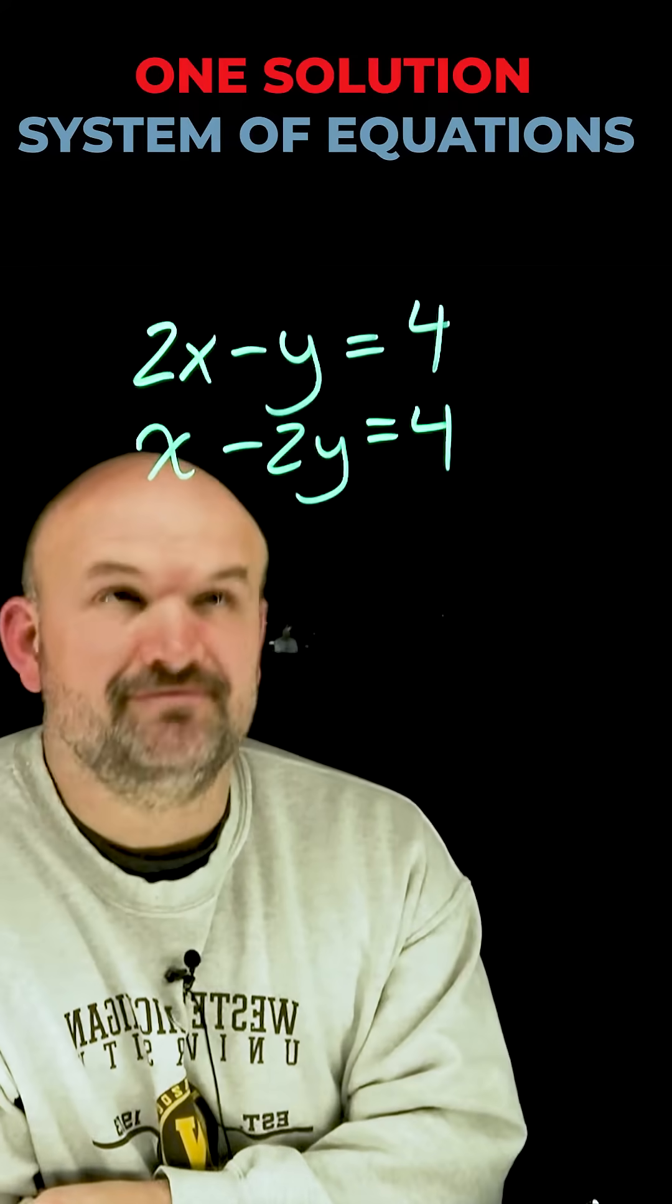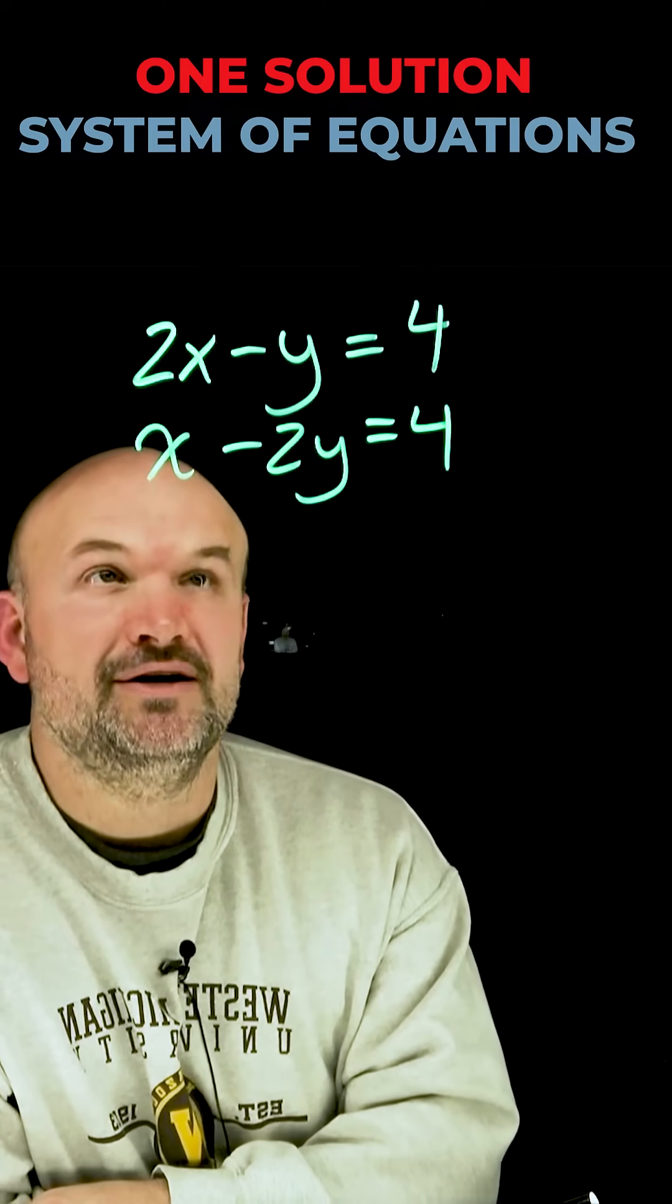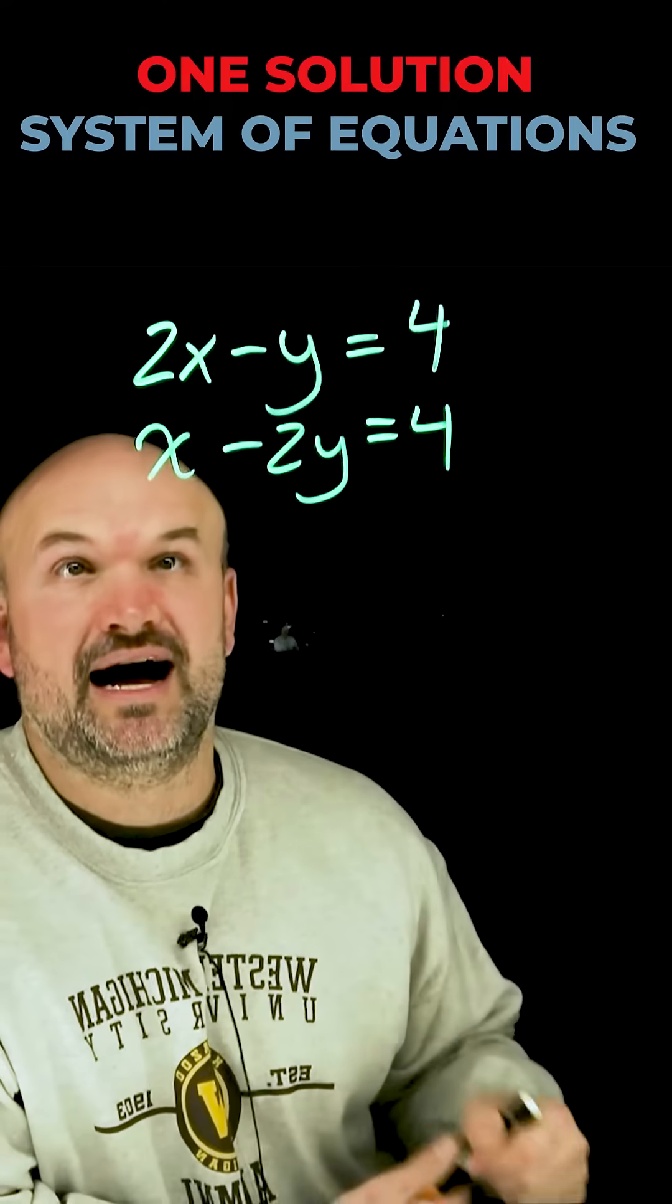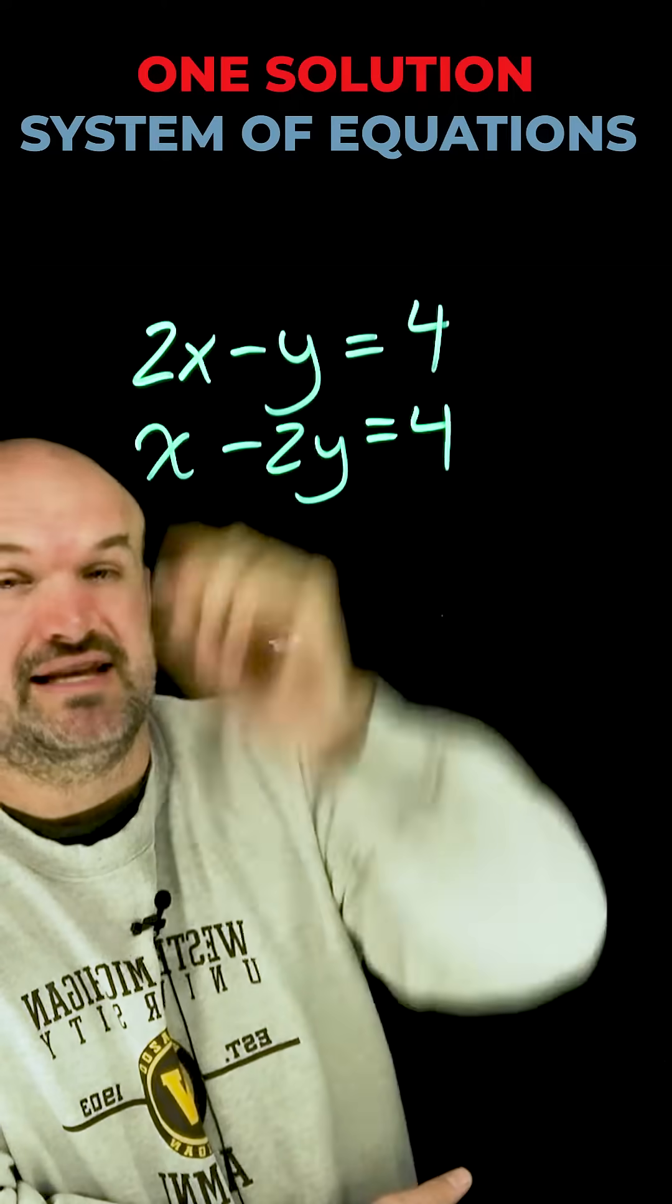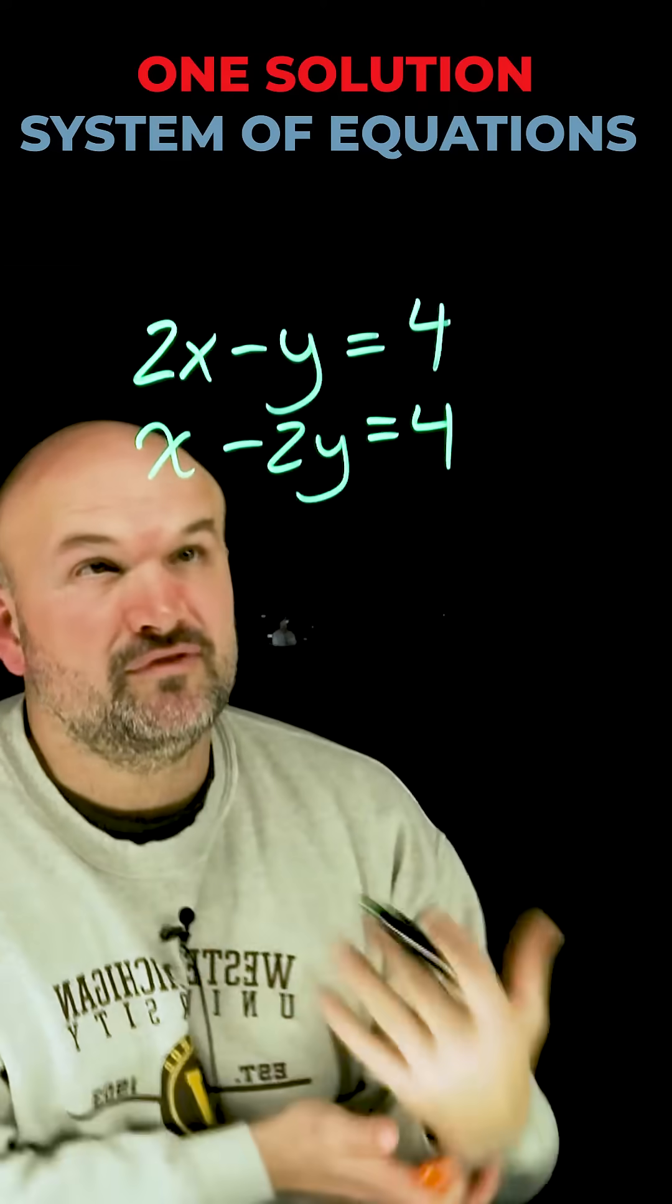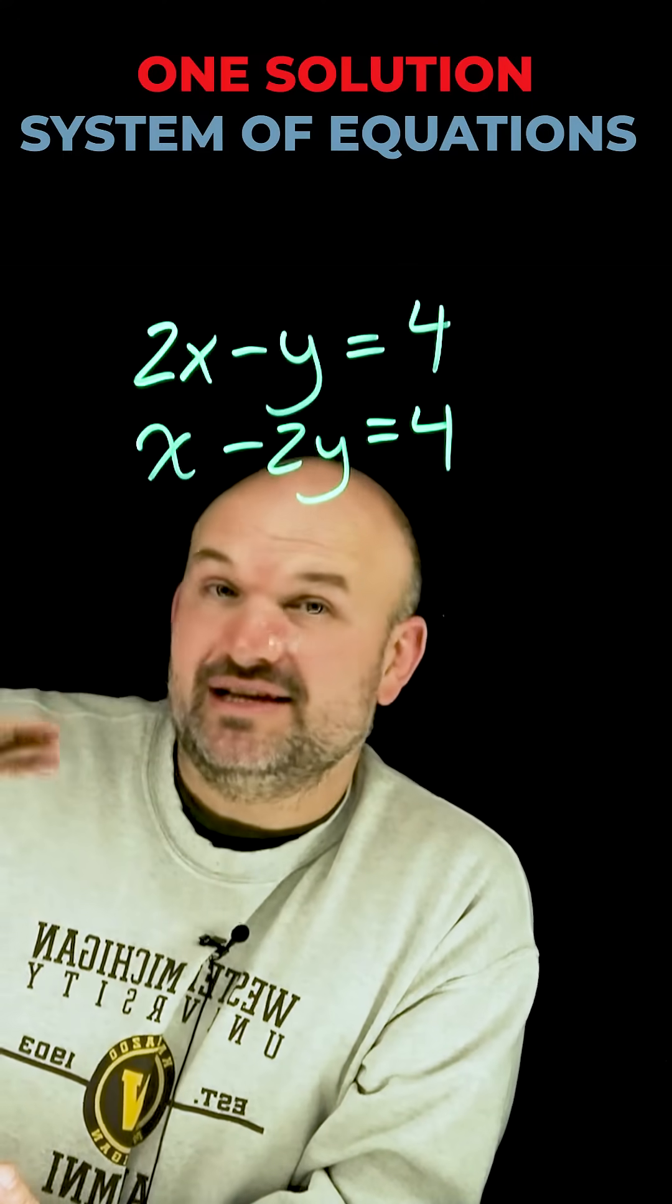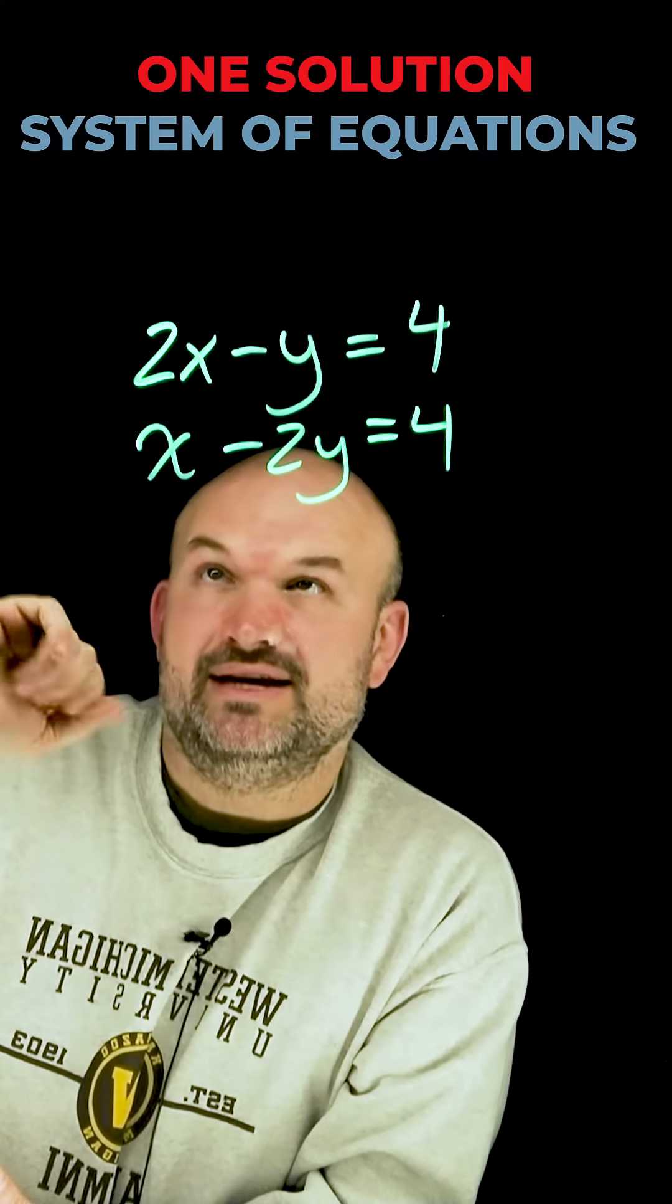This system of equations has one solution. Let's figure out what exactly it is. The first thing I'm going to do is use the elimination method. To use the elimination method, I want the coefficient of the same variable to be exactly the same. And preferably for the elimination method, I like to add the two equations. That means I want the coefficients to be not only exactly the same, but one positive and one negative.